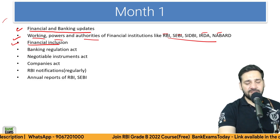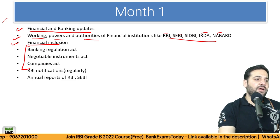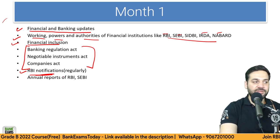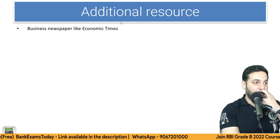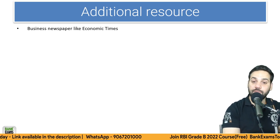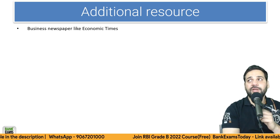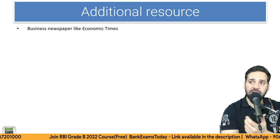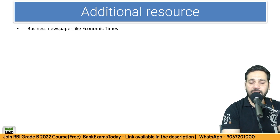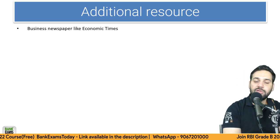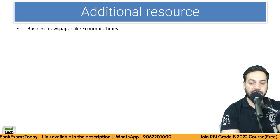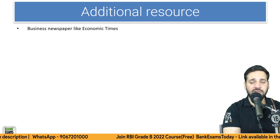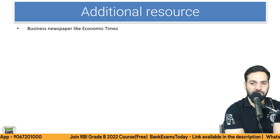We will also cover financial inclusion, basic government schemes, basic acts like Banking Regulation Act, Negotiable Instruments Act, and Companies Act. RBI circulars you need to read on a regular basis, along with the annual reports of SEBI and RBI. For additional resources, I recommend Economic Times, Business Standard, and Live Mint. Mint and Business Standard are really good — if possible, take a subscription; it provides amazing value for money.